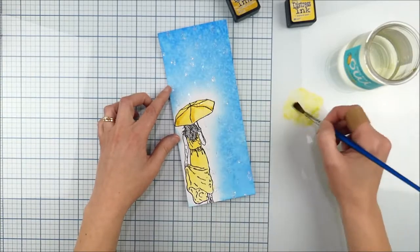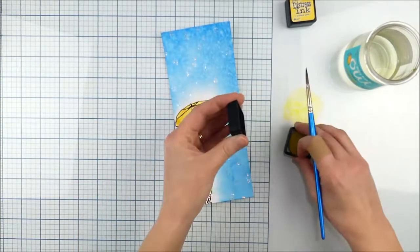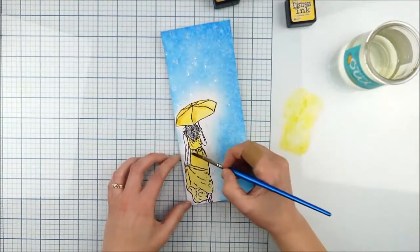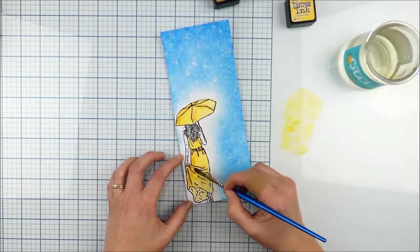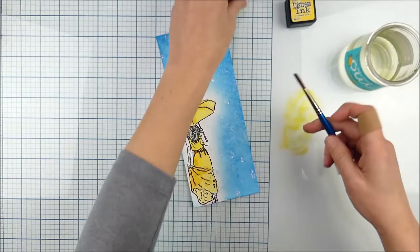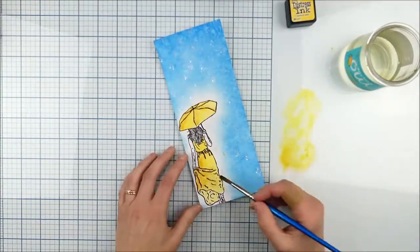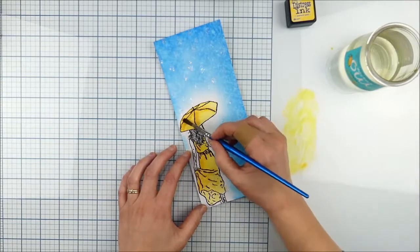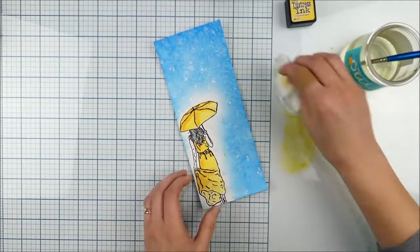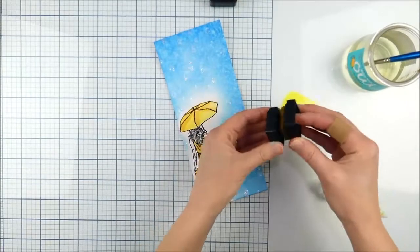I started off there with mustard seed and then I came in as you see now with fossilized amber to add a little bit of shading and shadow. I'm just kind of hitting where those dark areas would be on the dress and kind of adding that little bit of depth to the image. You see I kept just smooshing a little bit more ink on my palette.